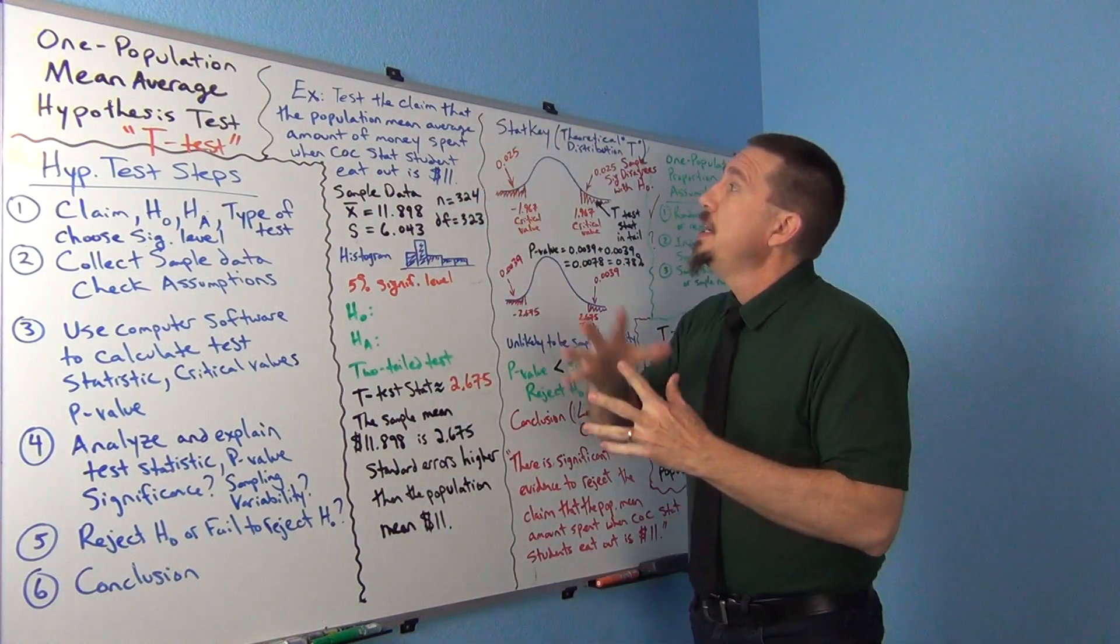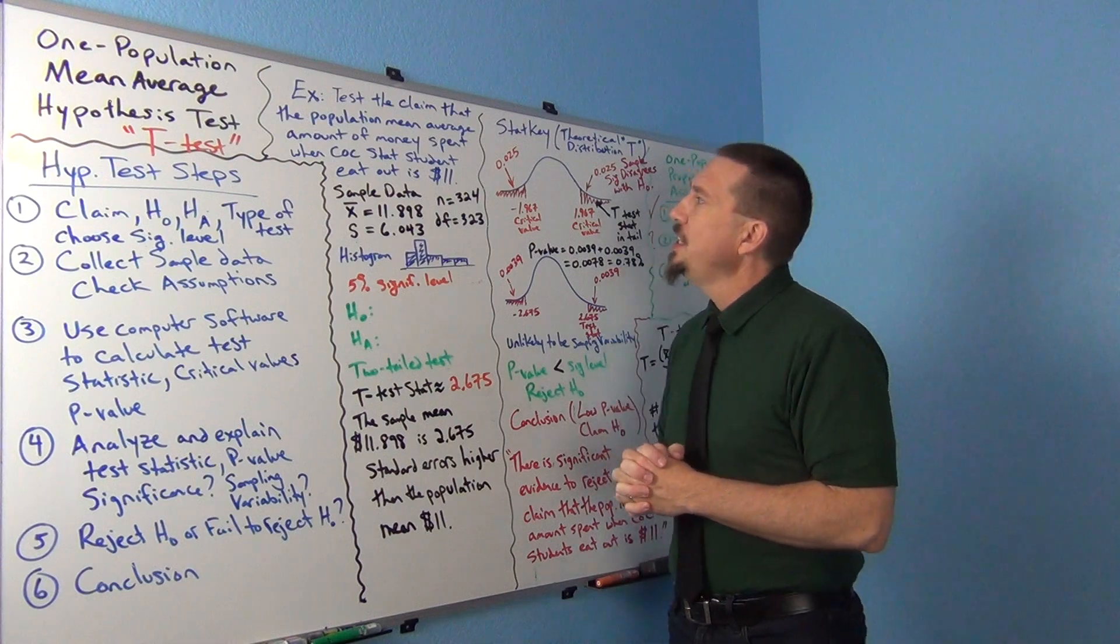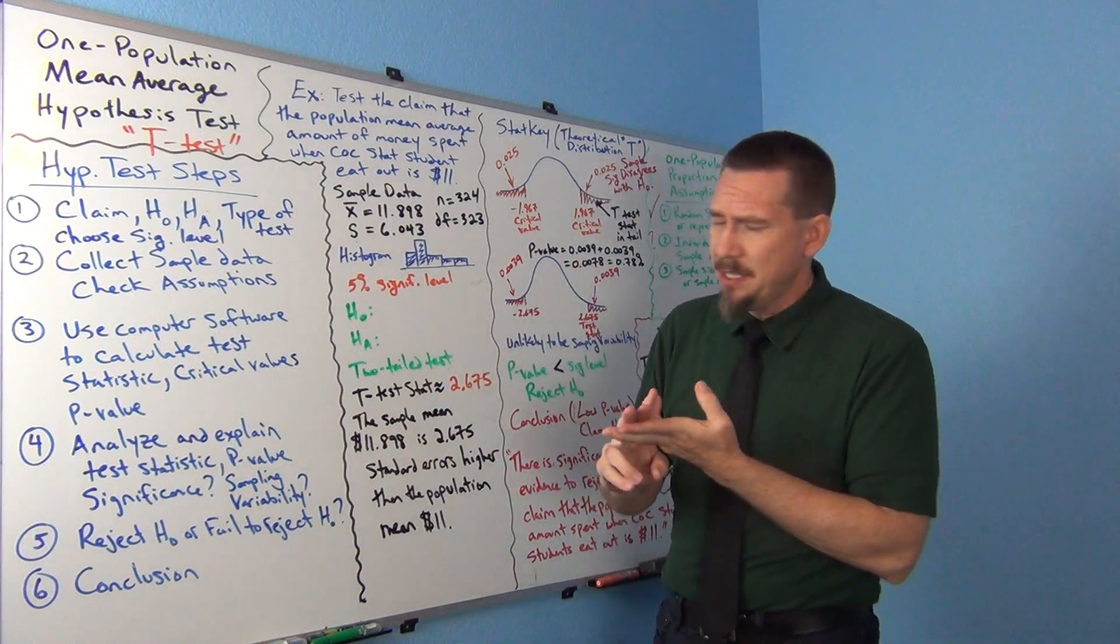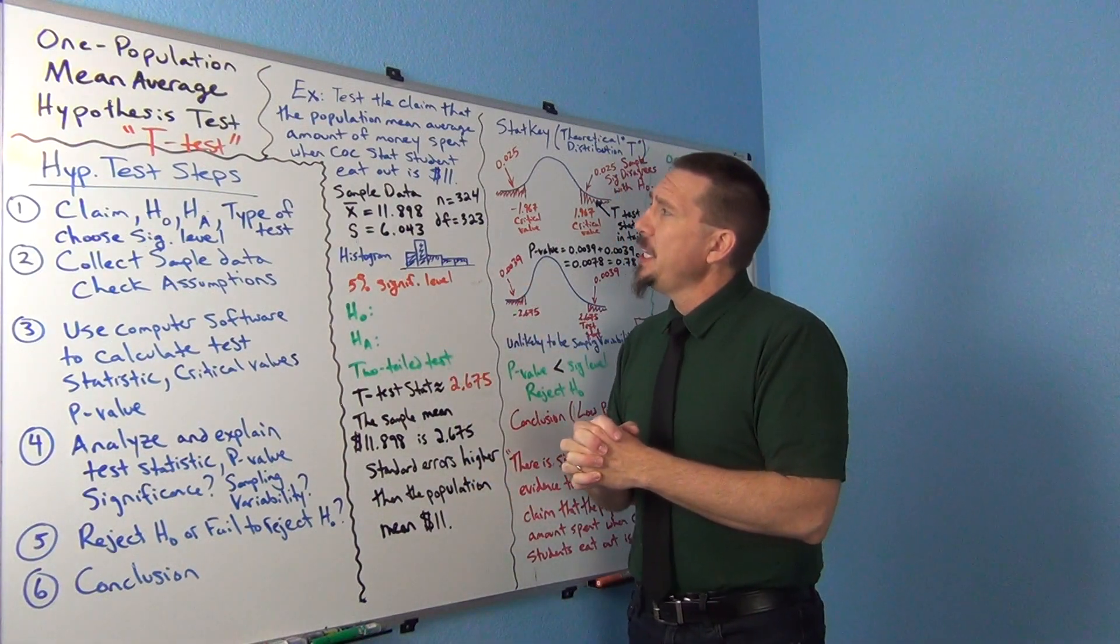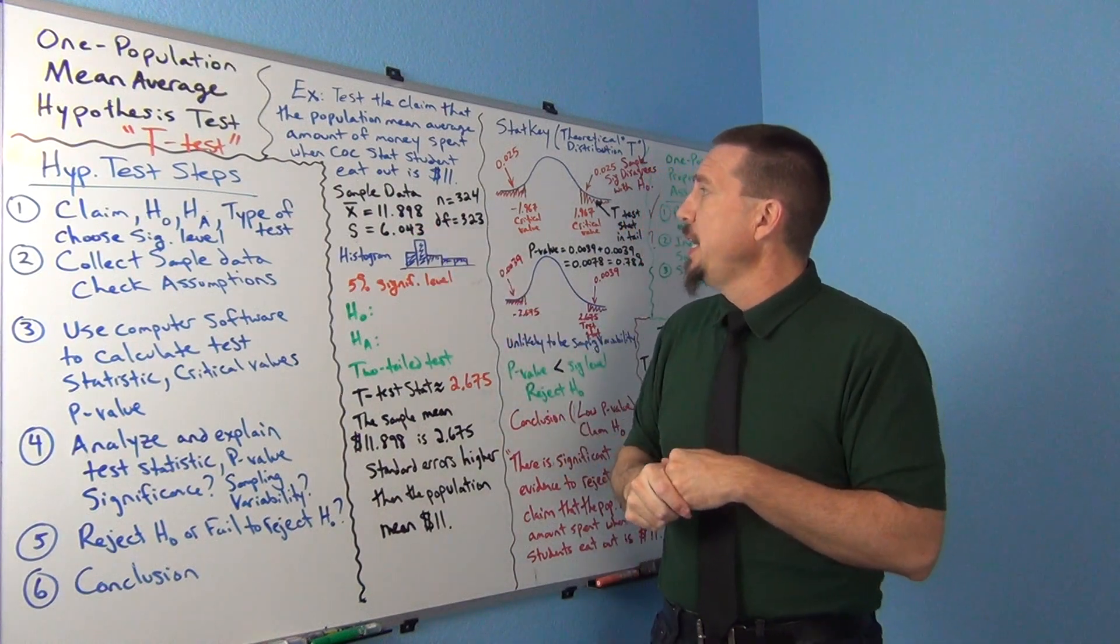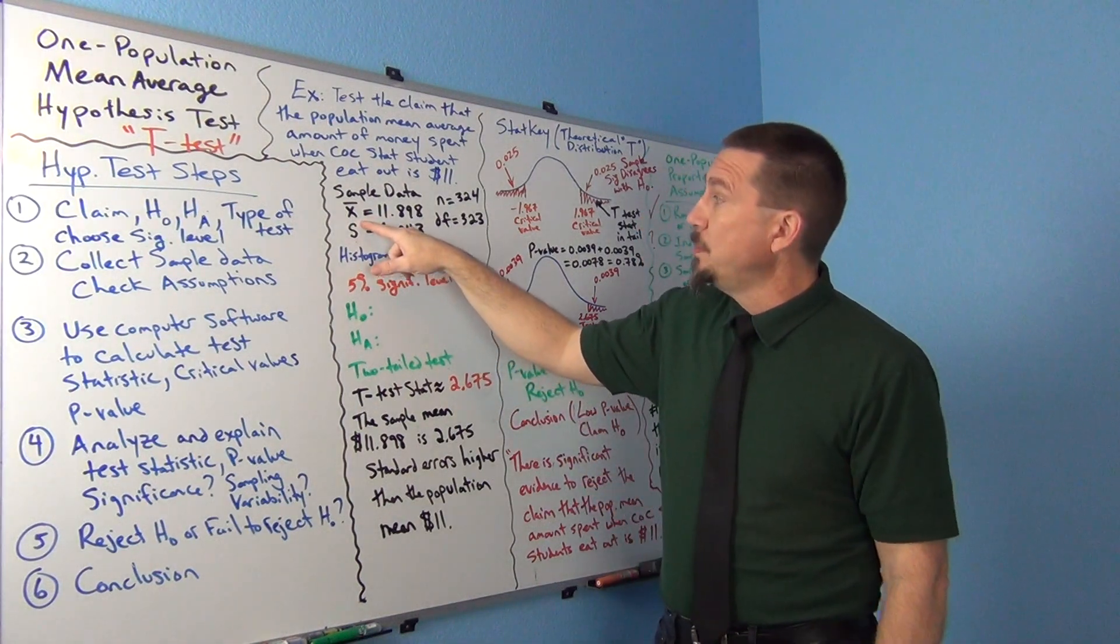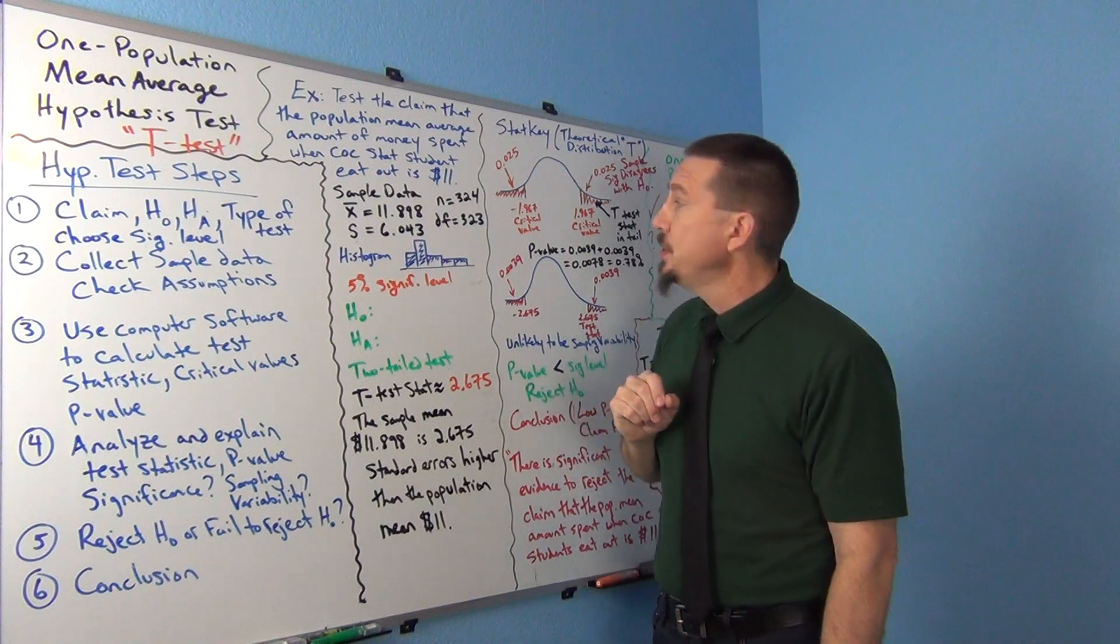The example is, we're testing the claim that the population mean average amount of money spent when COC stat students eat out is $11. We had a census of the math 140, our statistics students in the fall 2015 semester. We asked them, when you eat out, how much on average do you spend? Our sample data came out to be the sample mean was $11.898. Our standard deviation was 6.043, that's the letter S. The sample mean is usually denoted by the letter X bar. N is our sample size. There was a total of 324 stat students in the data.